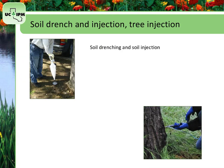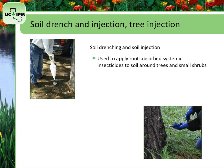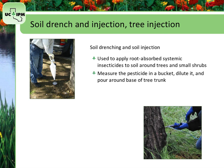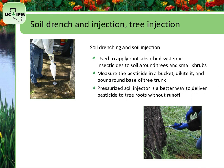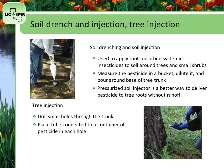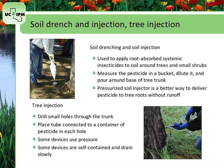Soil drenching and soil injection are used to apply root-absorbed systemic insecticides to soil around trees and small shrubs. For drench applications, you can measure the pesticide in a bucket, dilute it, and pour it onto the soil around the base of a tree trunk. A pressurized soil injector is a better way to deliver pesticide to tree roots without runoff. For tree injections, drill small holes through the trunk; in each hole, place a tube connected to a container of pesticide. Some application devices use pressure to force the pesticide into the tree, while others are self-contained and drain slowly into the drilled holes. A drawback with tree injections is potential injury to tree trunks caused by drilling.